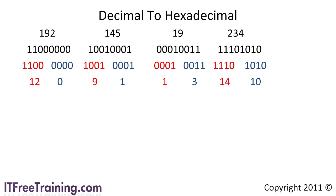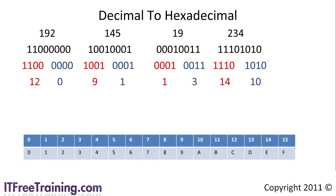Each group of 4 bits has been given a value between 0 and 15. Once you have this value you can use this table to determine the hexadecimal value. The first value, 12, gets a value of C. Values between 0 and 9 get the same value, so the values in the example — 0, 9, 1, 1, and 3 — all get those same values. At the far right, the value 14 gets the value of E and the value 10 gets the value of A.